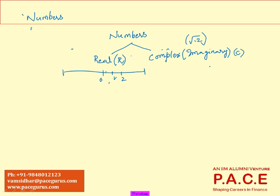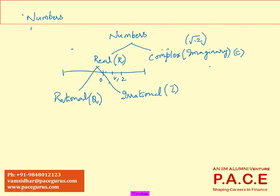For any numbers that cannot exist in the real world, we categorize them as complex or imaginary numbers. Most of our dealing will be with real numbers. The world of complex numbers is completely different and must be studied separately — we are not much bothered about it for our ASR exam. Real numbers can again be categorized into two broad groups: rational numbers and irrational numbers. Rational numbers are generally denoted by Q.